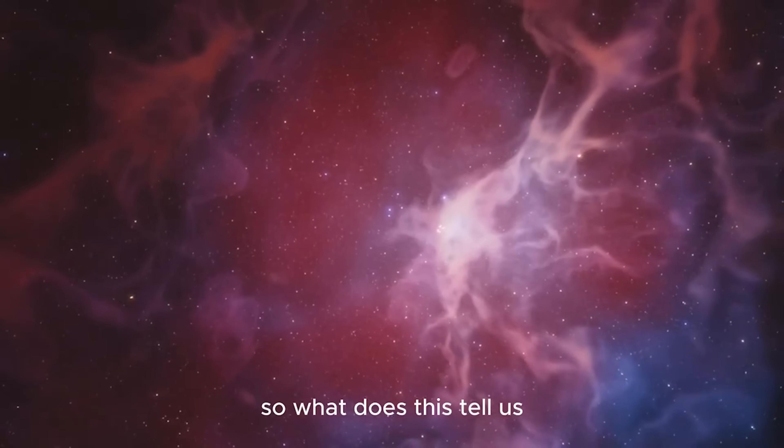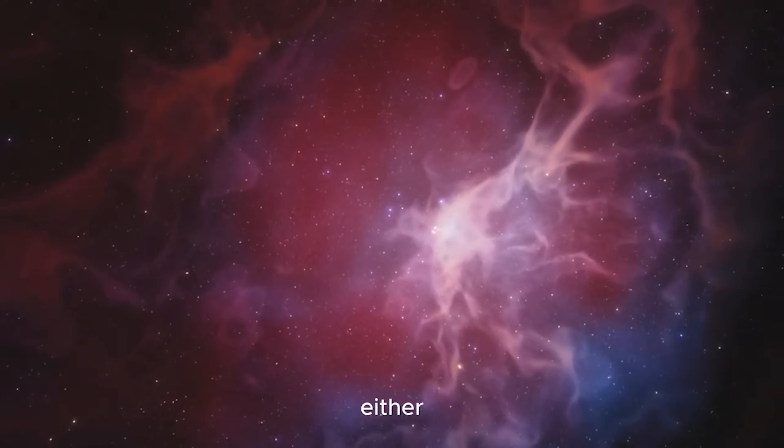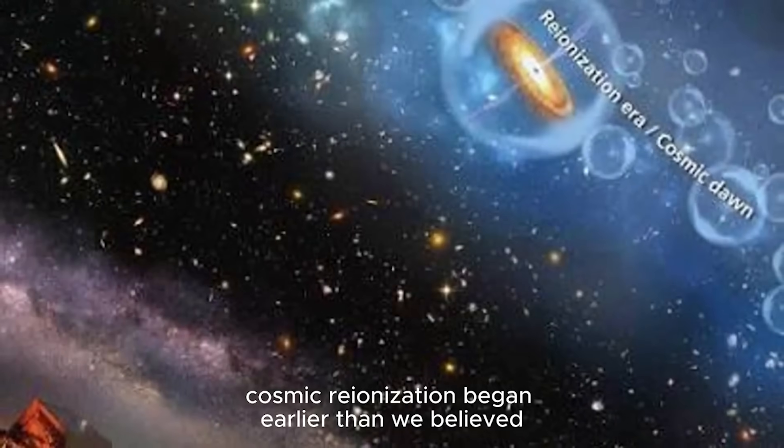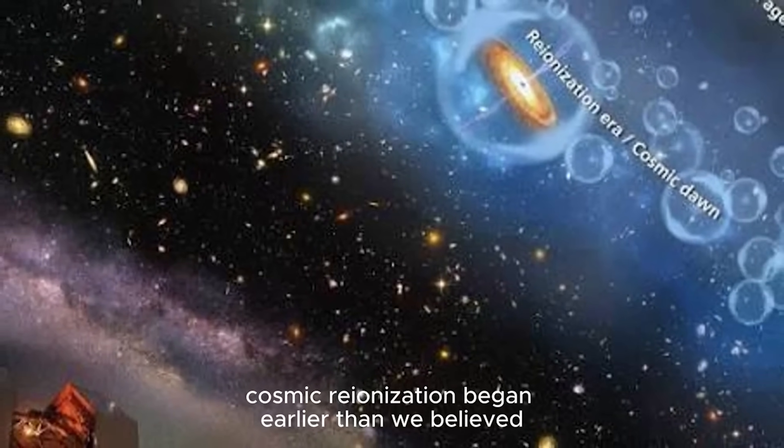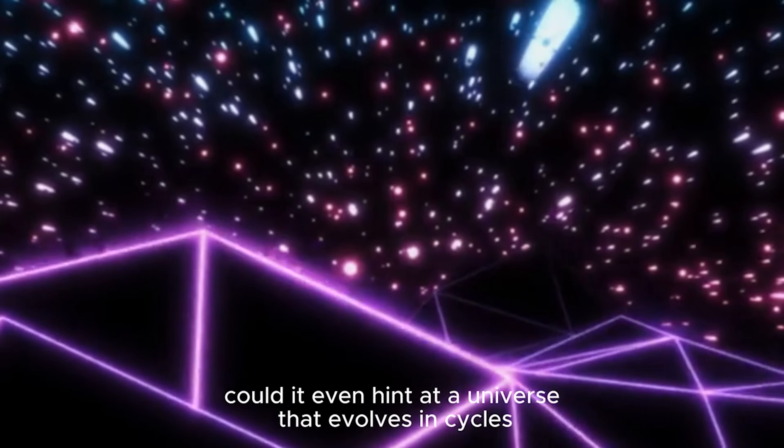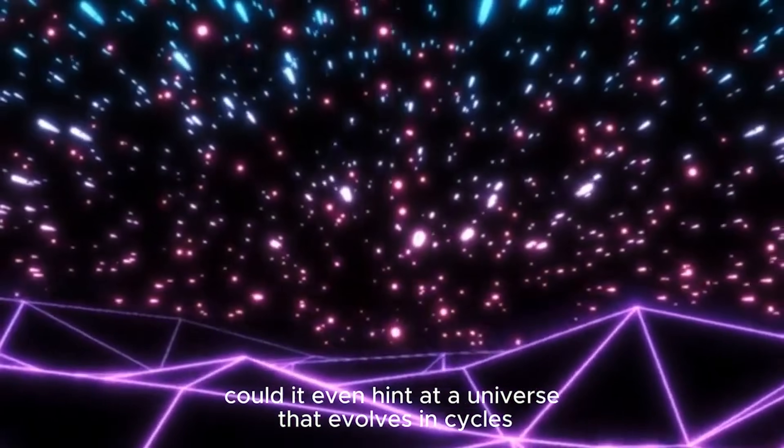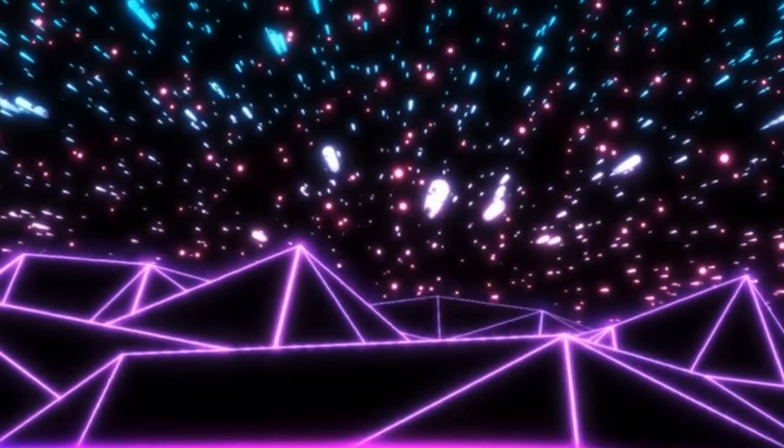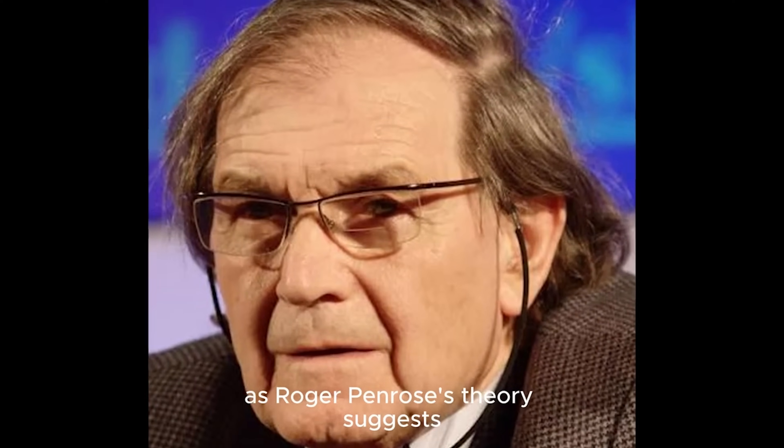So, what does this tell us? Either cosmic reionization began earlier than we believed, or it progressed far faster than our models predicted. Could it even hint at a universe that evolves in cycles, as Roger Penrose's theory suggests?